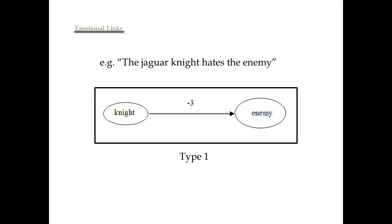This is an example of an emotional link of type 1. The jaguar knight hates the enemy. I also use graphic representation of the emotional links. In this case, we have a solid arrow representing type 1 and on top of it, we have the balance and the intensity of the emotion. In this case, minus 3.